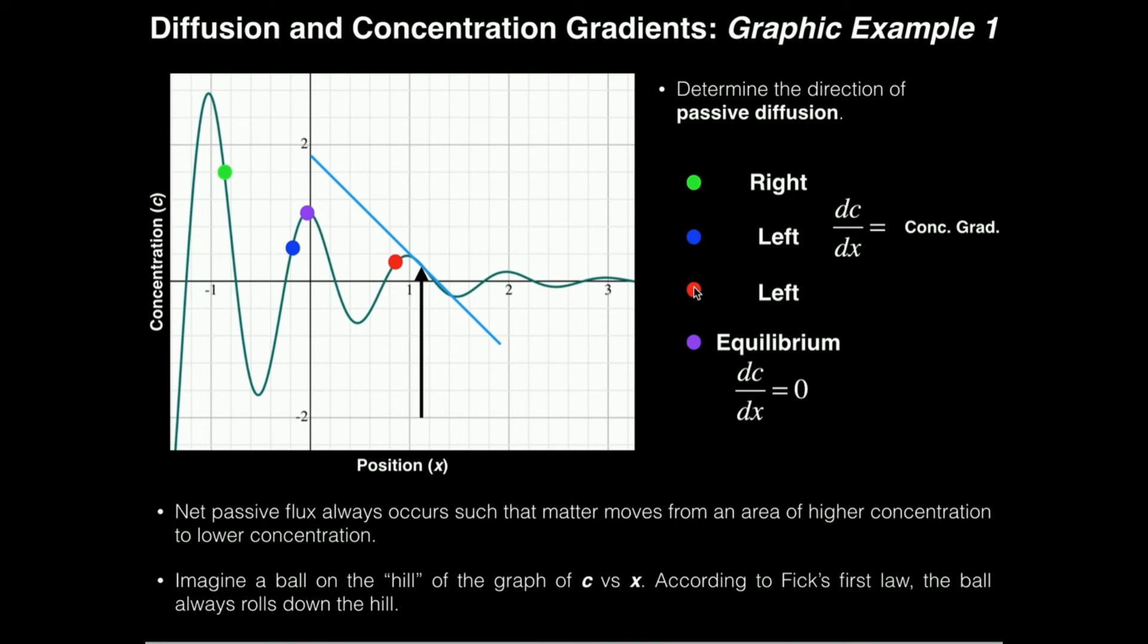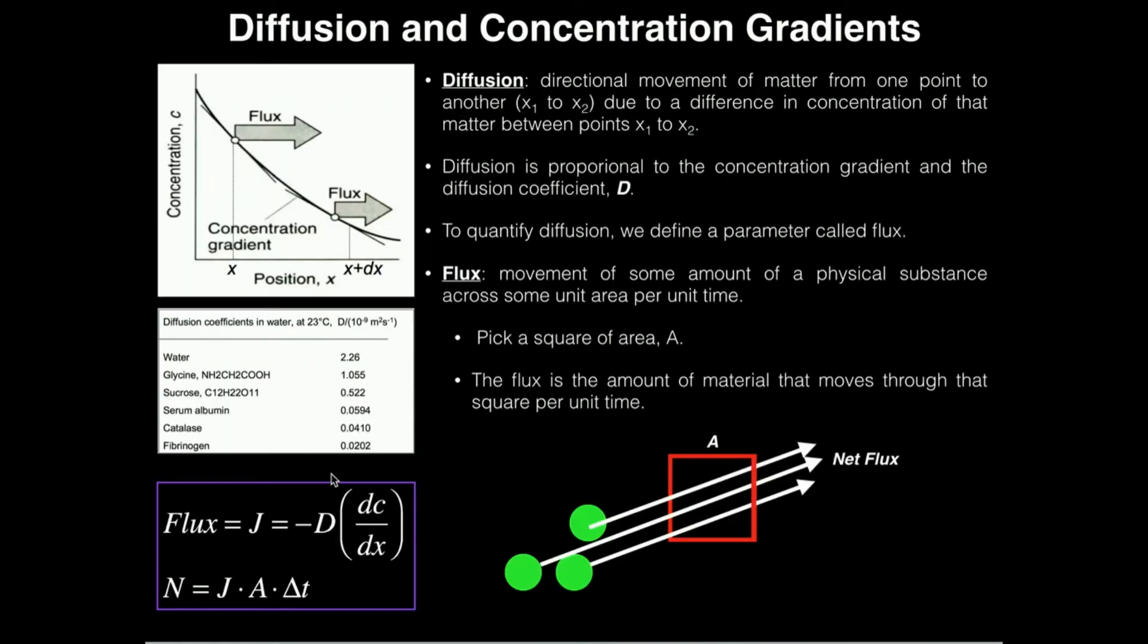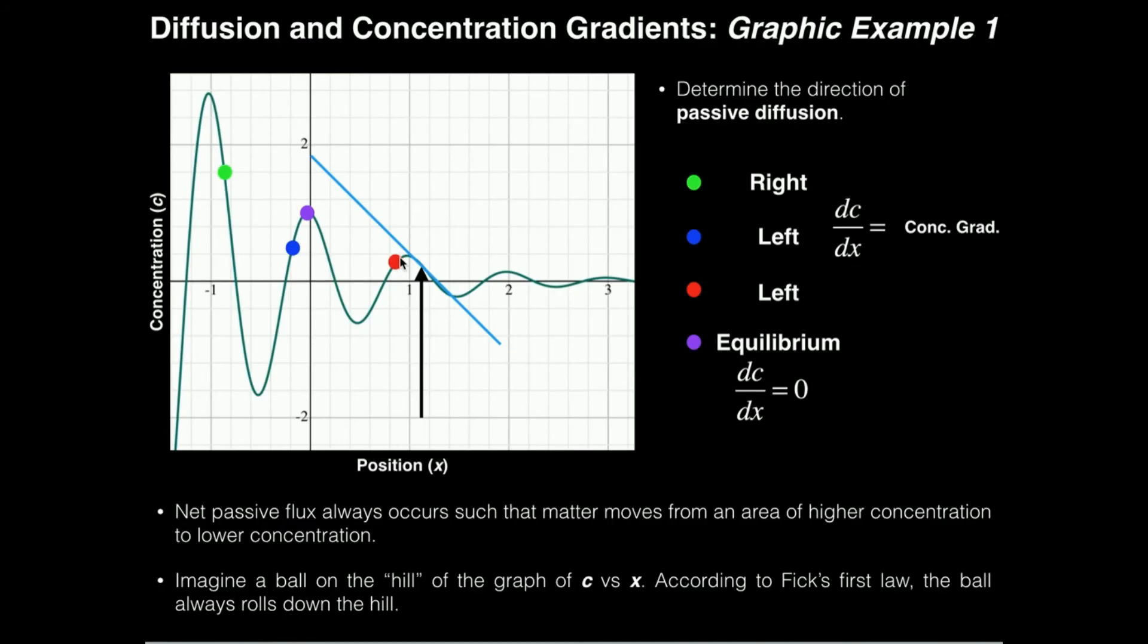What about the red point? Well, again here, we're on a positive slope, right? So if we have a positive slope, it's a positive concentration gradient. So positive slope times a positive diffusion coefficient times a negative number, we have a negative flux, which negative is the left direction, so flux occurs to the left.